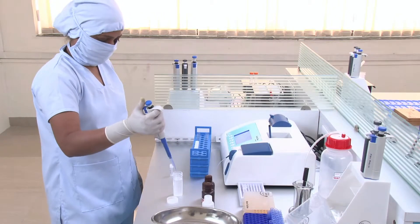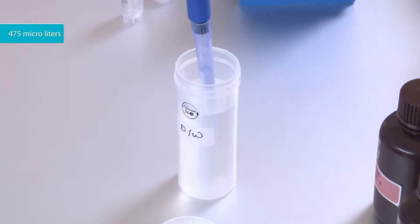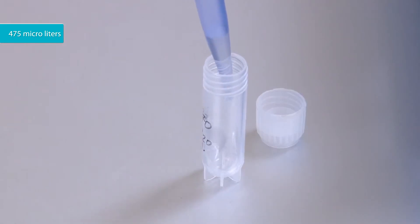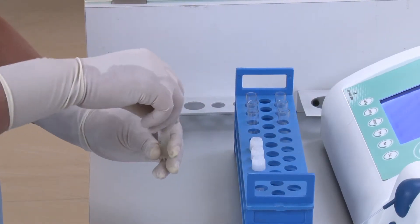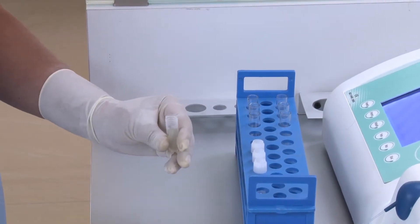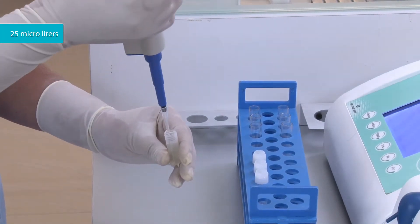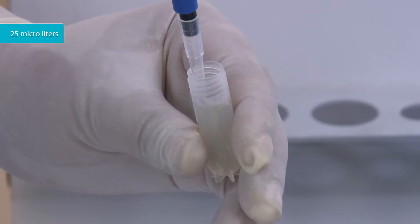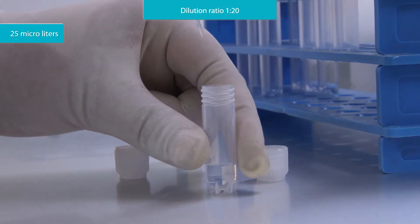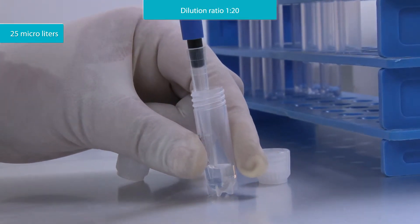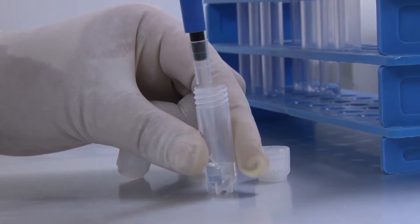Put 475 microliters of normal saline into the microtube. Add 25 microliters of seminal plasma to the microtube. Hence the dilution is 1 to 20. Mix it well.